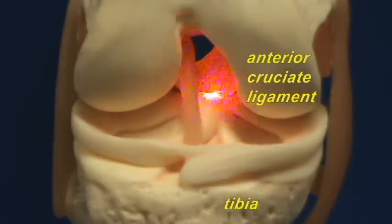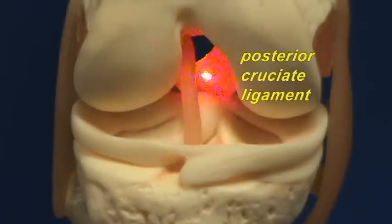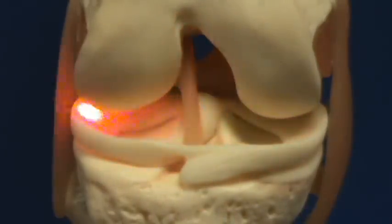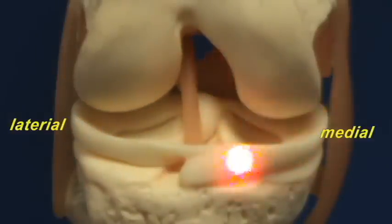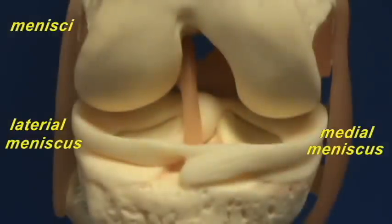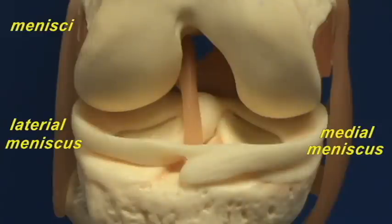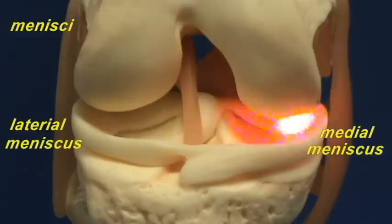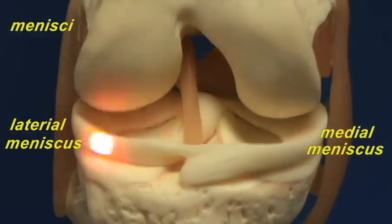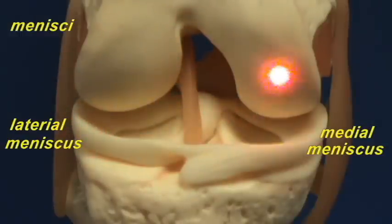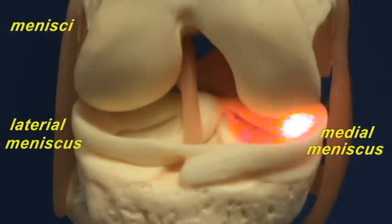Back over here, we have the posterior cruciate ligament. And here we can see the lateral and the medial menisci. These are pads — the menisci are pads of fibrocartilage. You can see they have a C shape to them. They are going to help stabilize the knee joint and allow for a continuous surface on which the smooth articular surfaces are going to ride.